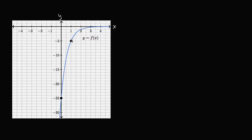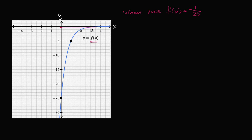We have a graph here of the function f of x, and f of x is going to be an exponential function. It looks like one, but it's even nicer when someone tells you that. Our goal in this video is to figure out at what x value f of x is going to be equal to negative one twenty-fifth. You might be tempted to just eyeball it, but when f of x is negative one twenty-fifth, that's right below the x-axis, so it would be very difficult — it might be at three, it might be at four, I am not sure.